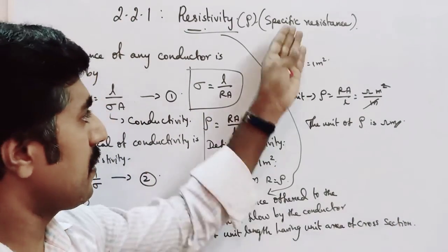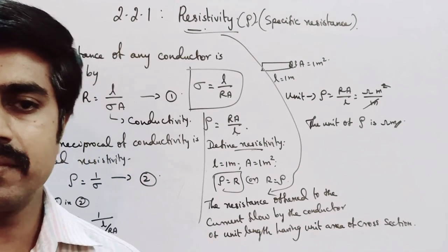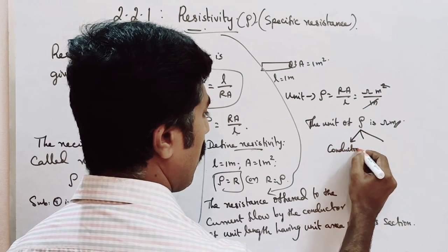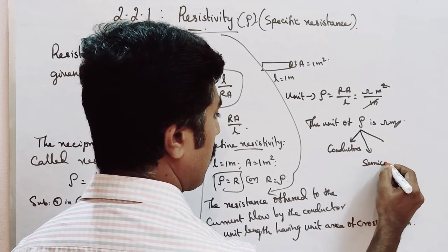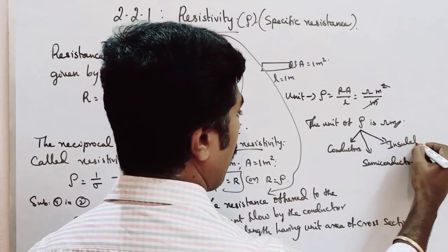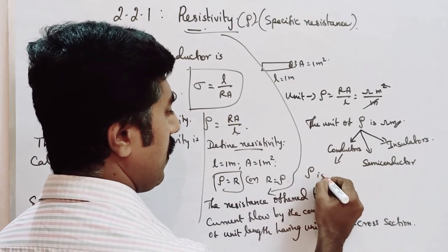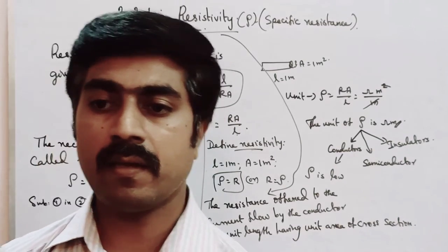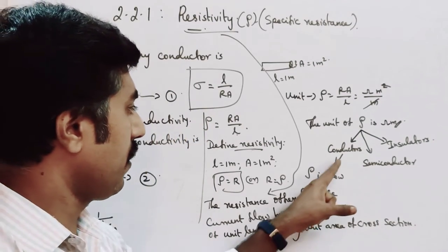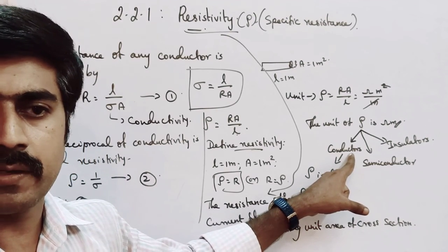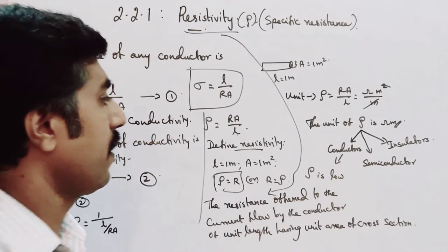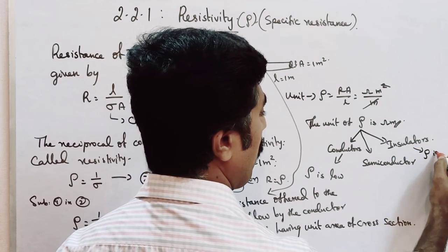Based on the resistivity — that is, the specific resistance — materials are classified into three categories. In conductors, the resistivity is low, meaning their immunity to current flow is low. The resistivity of conductors is low, while the resistivity of insulators is high.